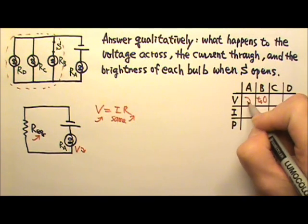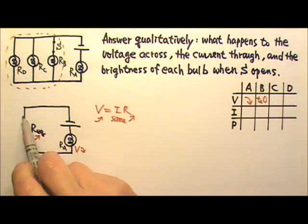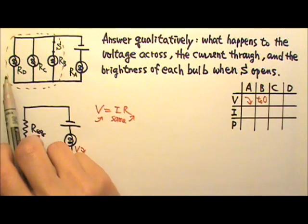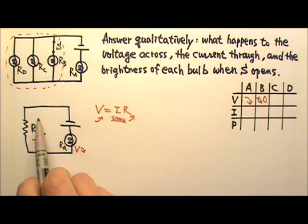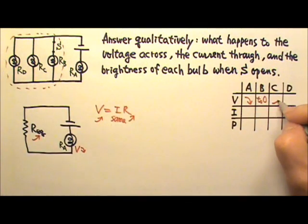So bulb A's voltage decreases, and this one's voltage increases. And this one is really those in parallel, that means they get the same voltage. So when this voltage increases, bulb C and D's voltage also increases.